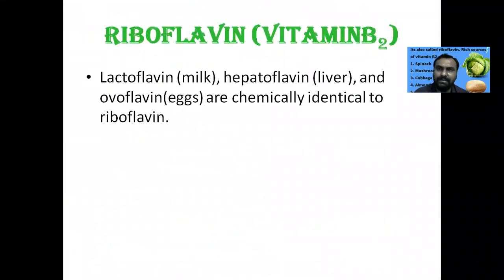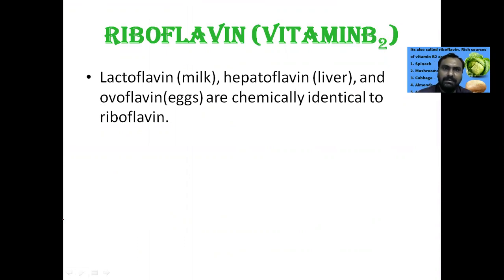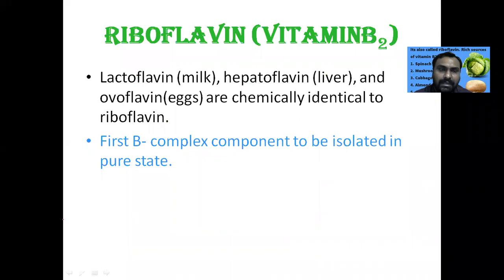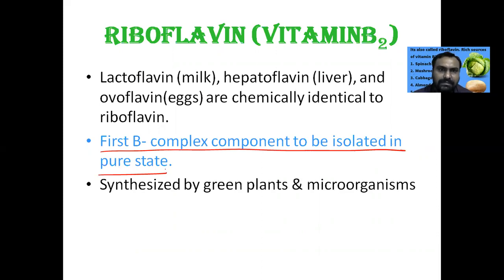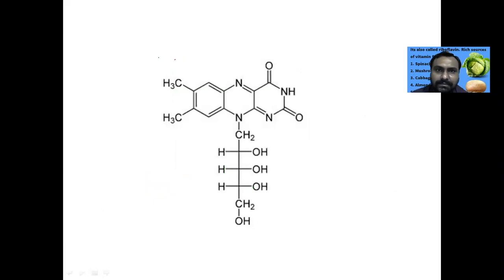This riboflavin vitamin B2 is chemically identical in structure to lactoflavin that is present in milk, or peptoflavin, and ovaflavin. Riboflavin was the first B-complex component to be isolated in the pure state. It is synthesized by green plants and microorganisms.